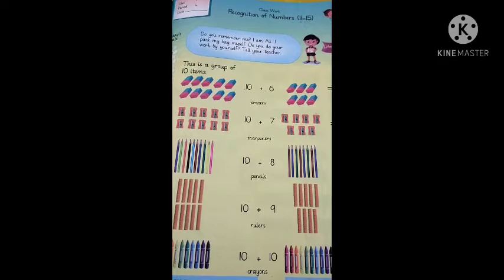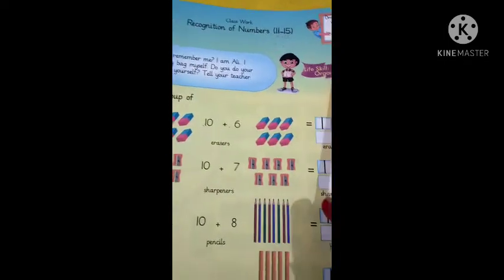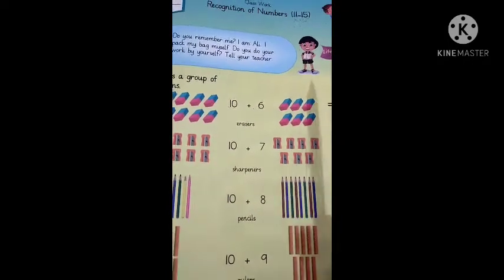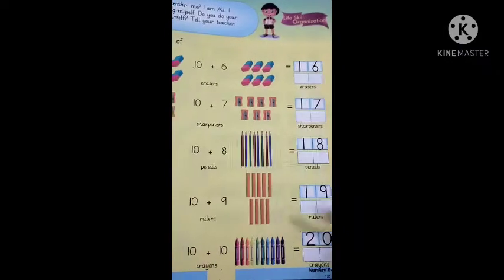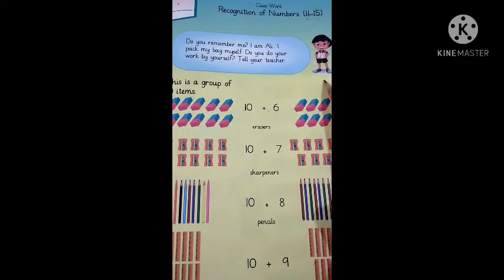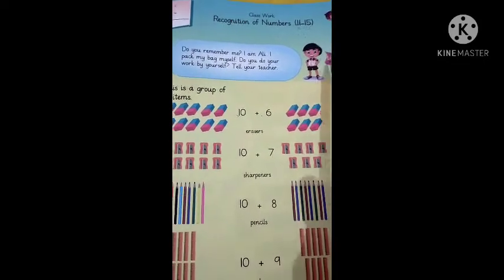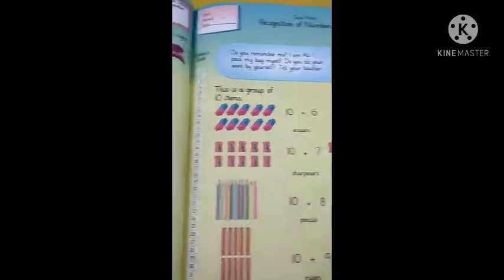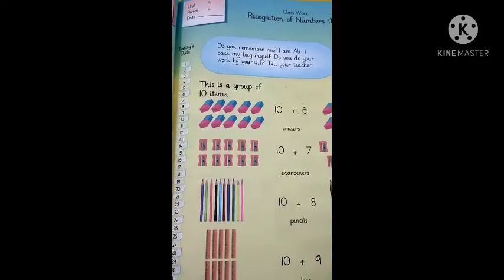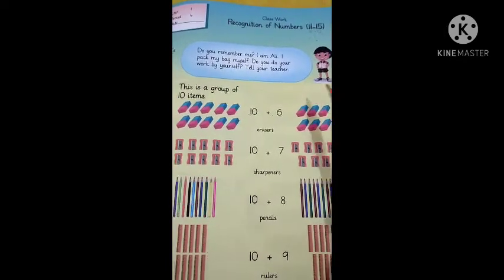We are going to start our Day 6 task. Firstly, mark today's date here and draw today's weather. Today we will recognise numbers 16 to 20. Do you remember me? I am Ali. I pack my bag myself. Do you do your work by yourself? Tell your teacher. Okay.